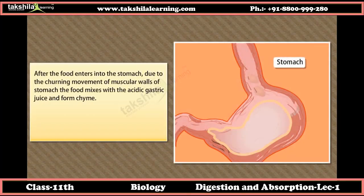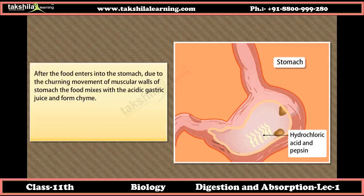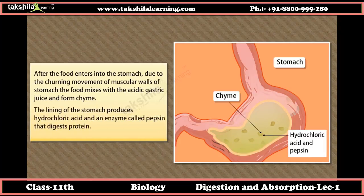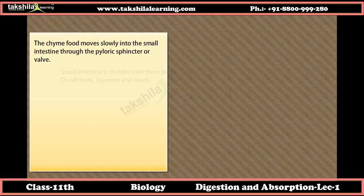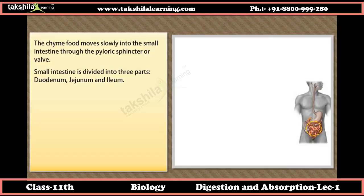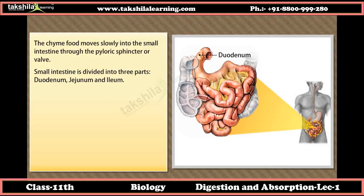After food enters the stomach, churning movements of the muscular walls mix the food with acidic gastric juice to form chyme. The stomach lining produces hydrochloric acid and the enzyme pepsin, which digests protein. The chyme then moves slowly into the small intestine through the pyloric sphincter. The small intestine is divided into three parts: duodenum, jejunum, and ileum.